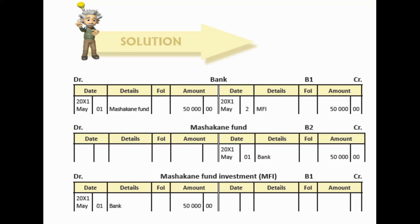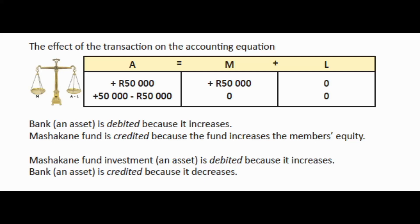Now let's look at the second entry. Green Bean Sports Club invested $50,000 in Zaza Bank at 24% interest per annum as the Mashakani fund investment. It was stipulated in the estate that the money had to be invested on a fixed deposit. We credit bank because we pay the money into the investment account — credit bank with $50,000 and debit Mashakani fund investment with $50,000. The effect on the accounting equation: bank decreased with $50,000 and the investment asset increased with $50,000.